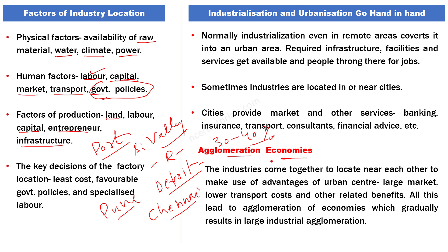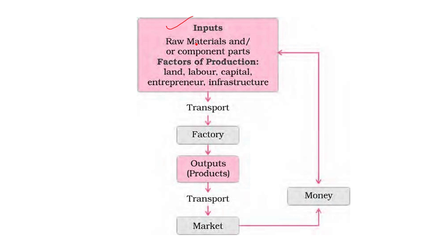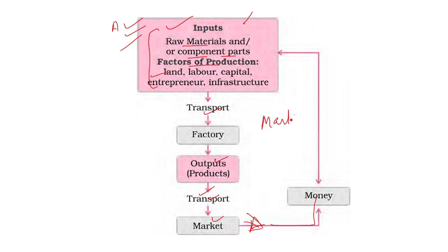Agglomeration economies industrial productivity को enhance करती हैं - industries एक दूसरे से benefit लेती हैं, cost reduction होता है और production efficiently होता है। Input में raw materials और factors of production में money लगती है, transport से factory तक raw material जाता है, workers भी transport use करते हैं, output बाहर निकलता है market तक। Transport cost कम हो तो production cost काफी low हो सकती है। Market में income generate होती है जिसे फिर input में लगाया जाता है - यही market और industry का linkage है।